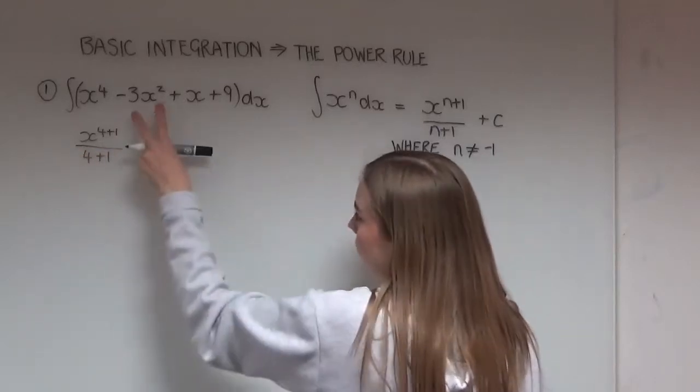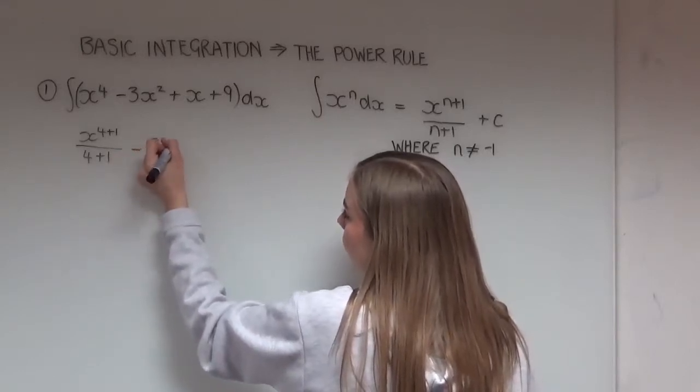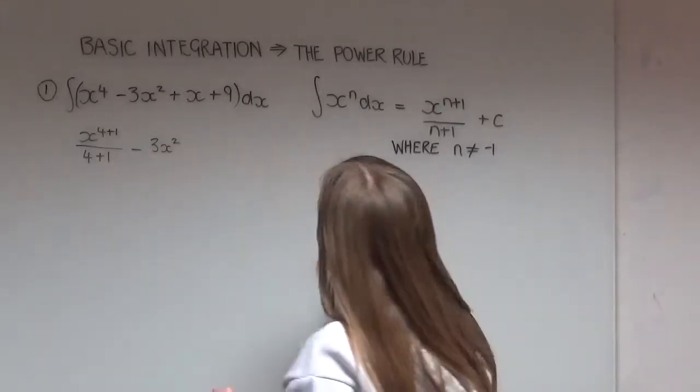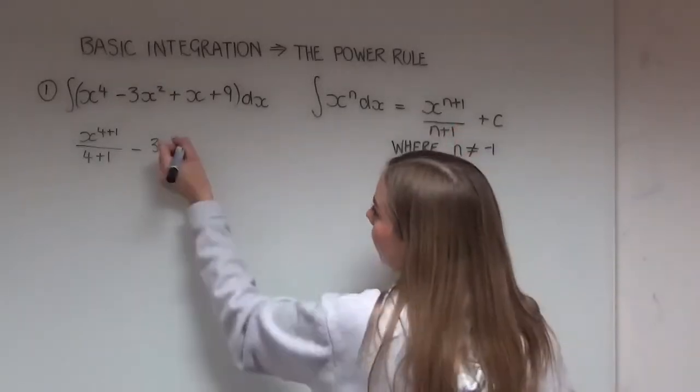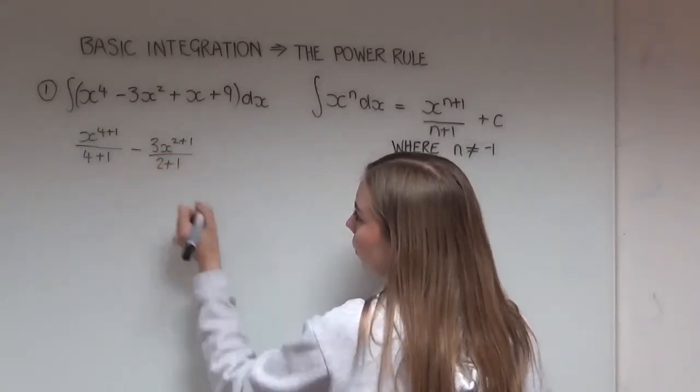Then we move on to our next term. The minus just stays the same there. And then we have 3x squared. In this situation 2 is our power, that's n. So we have to add on 1 to that, and then divide it all by n plus 1, so that's 2 plus 1.